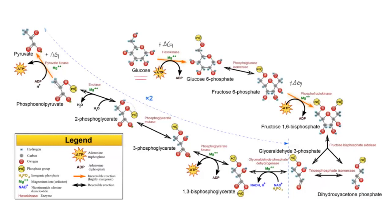This pathway is essentially the reverse of gluconeogenesis. That is to say, we want to start off with pyruvate and essentially reverse the pathway to produce glucose, which we can pump into our blood in times of fasting.